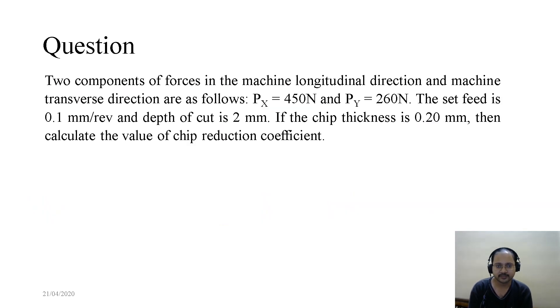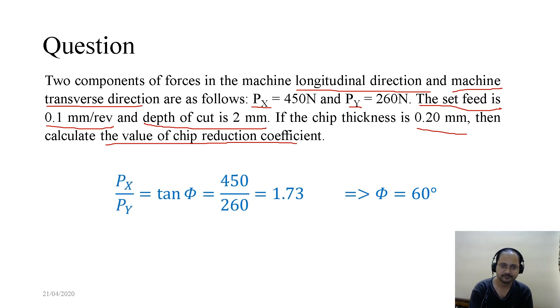Coming to the next question. Two components of forces in the machine longitudinal direction and machine transverse direction are as follows: Px equals 450N and Py equals 260N. The set feed is 0.1 mm per revolution and depth of cut is 2 mm. If the chip thickness is 0.20 mm, then calculate the value of chip reduction coefficient.